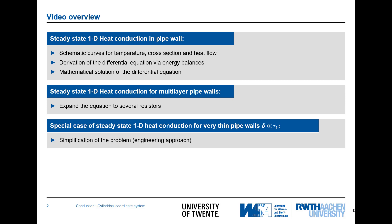Later on we will expand the one-dimensional heat conduction in a single layer to multi-layer pipe walls. And finally we will look at the special case for very thin walls where the wall thickness is much smaller than the radius of the wall. This will lead to a simplification of the problem — a nice engineering approach to a complex solution.